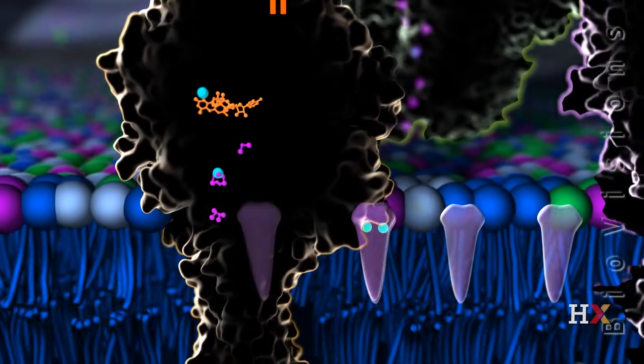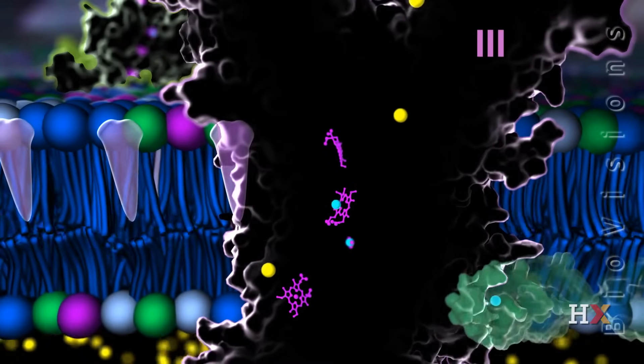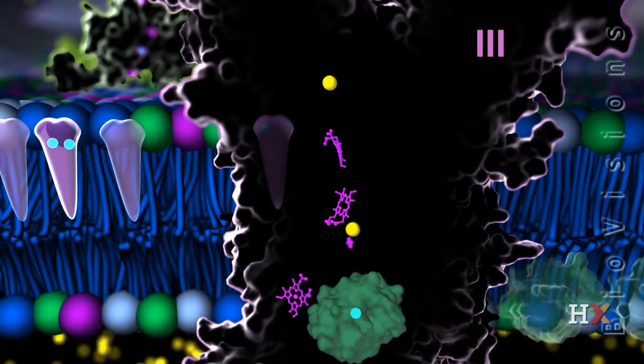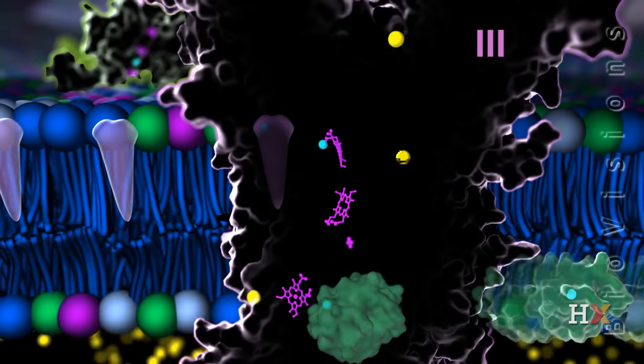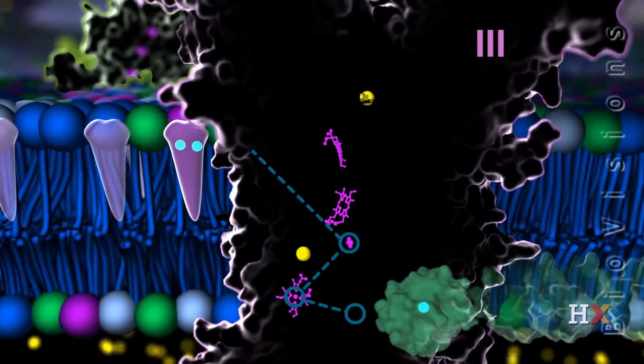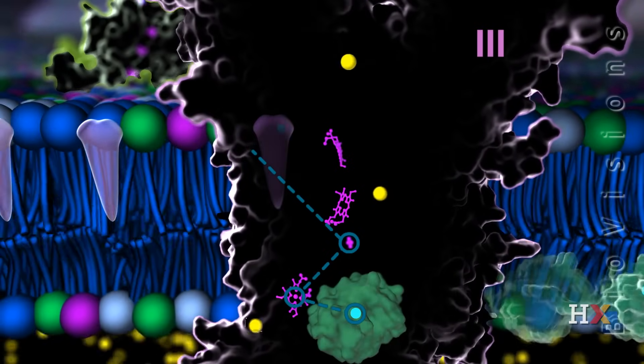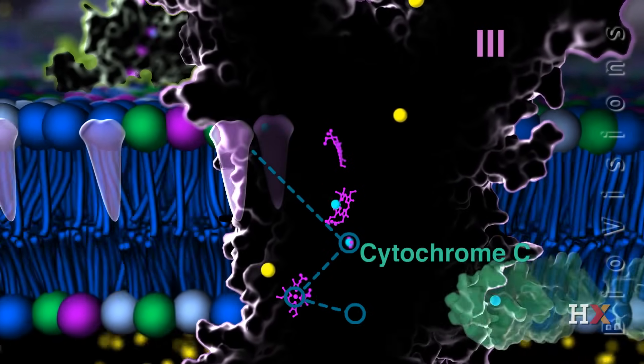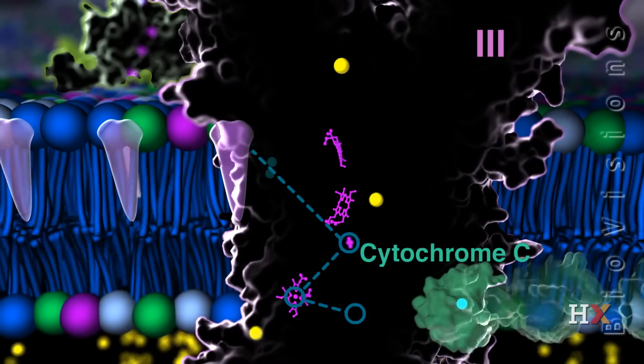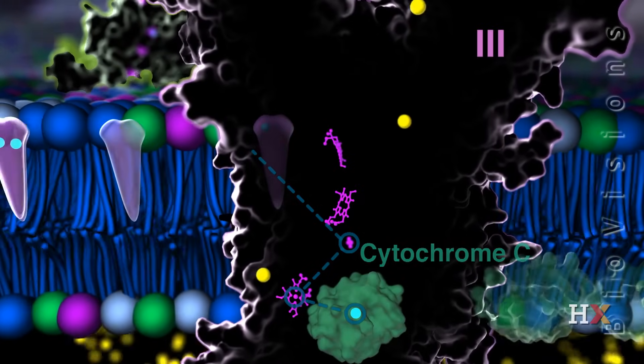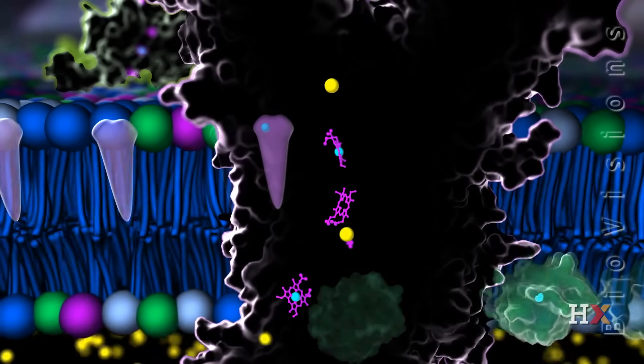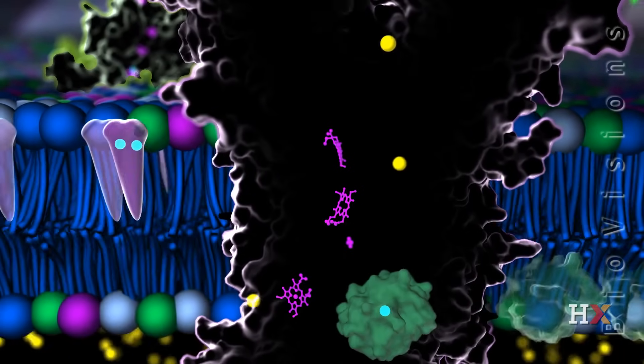Coenzyme Q molecules from complexes one and two donate their electrons to complex three. One electron is recyclable and can re-enter complex three later, but the other passes through two redox centers before reaching cytochrome C. Cytochrome C carries the electron to complex four.